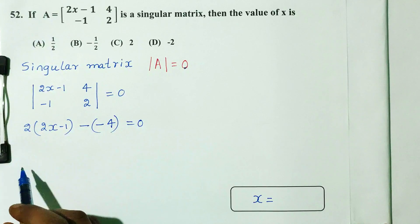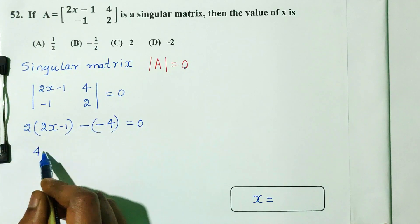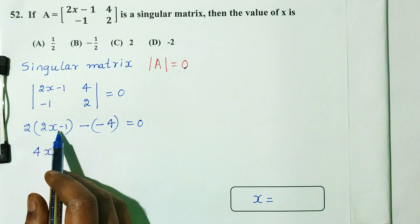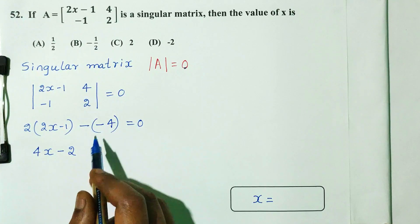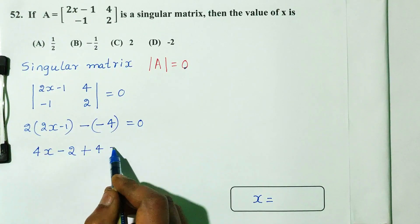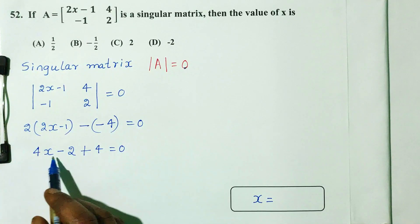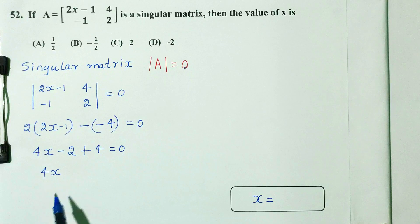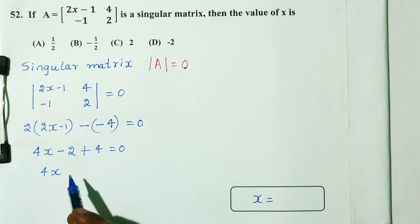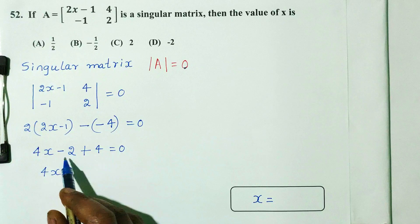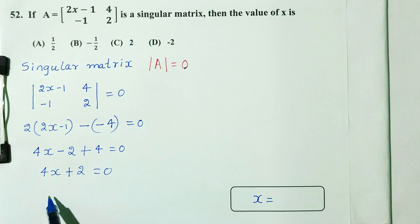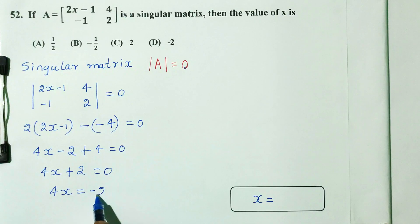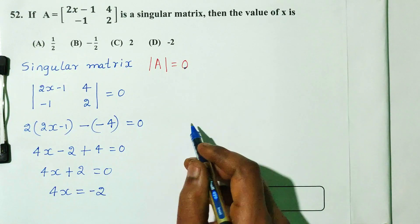Expanding: 2 into 2x gives 4x, minus 2 into 1 is minus 2. Then minus of minus 4 gives plus 4. So we have 4x minus 2 plus 4 is equal to 0, which simplifies to 4x plus 2 is equal to 0.